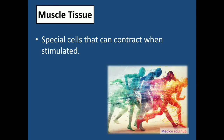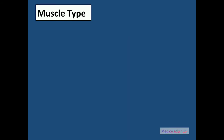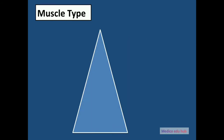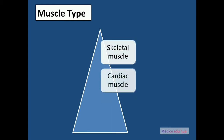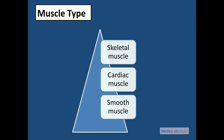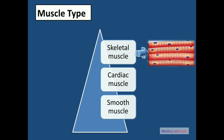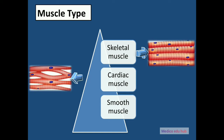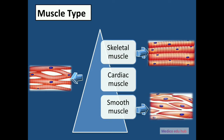They can generate a force producing movement. There are three types of muscle tissue in the body: skeletal muscle tissue, cardiac muscle tissue, and smooth muscle tissue. Cardiac and skeletal muscle are both striated in appearance while smooth muscle is not. Both cardiac and smooth muscles are involuntary, while skeletal muscle is voluntary.